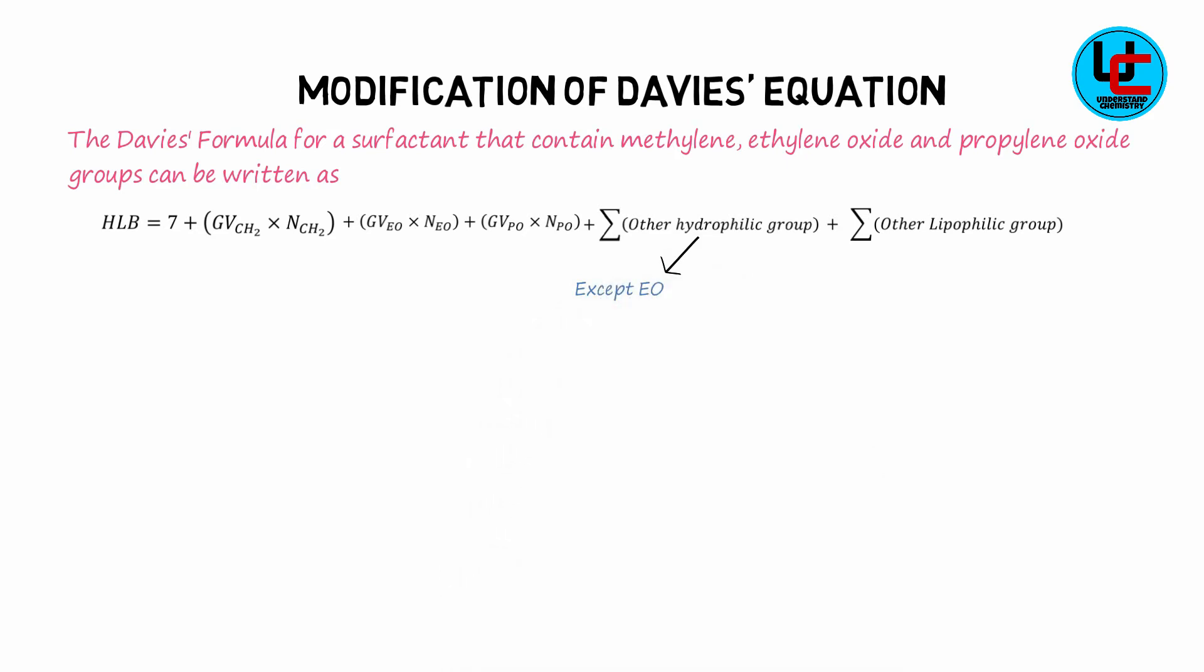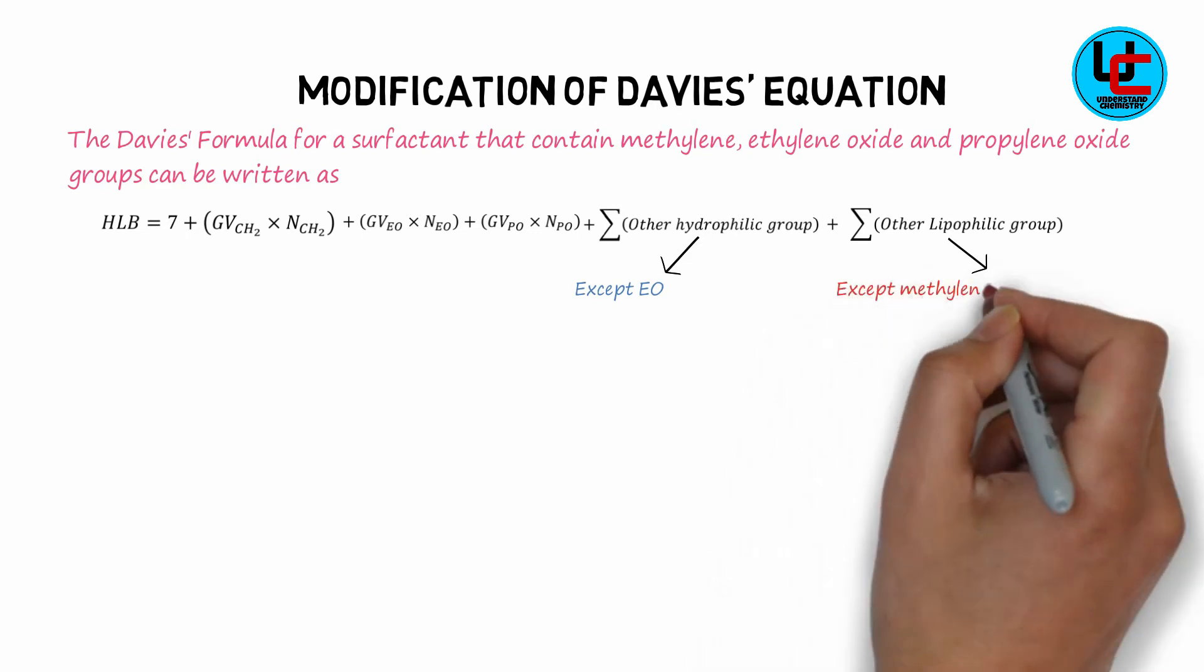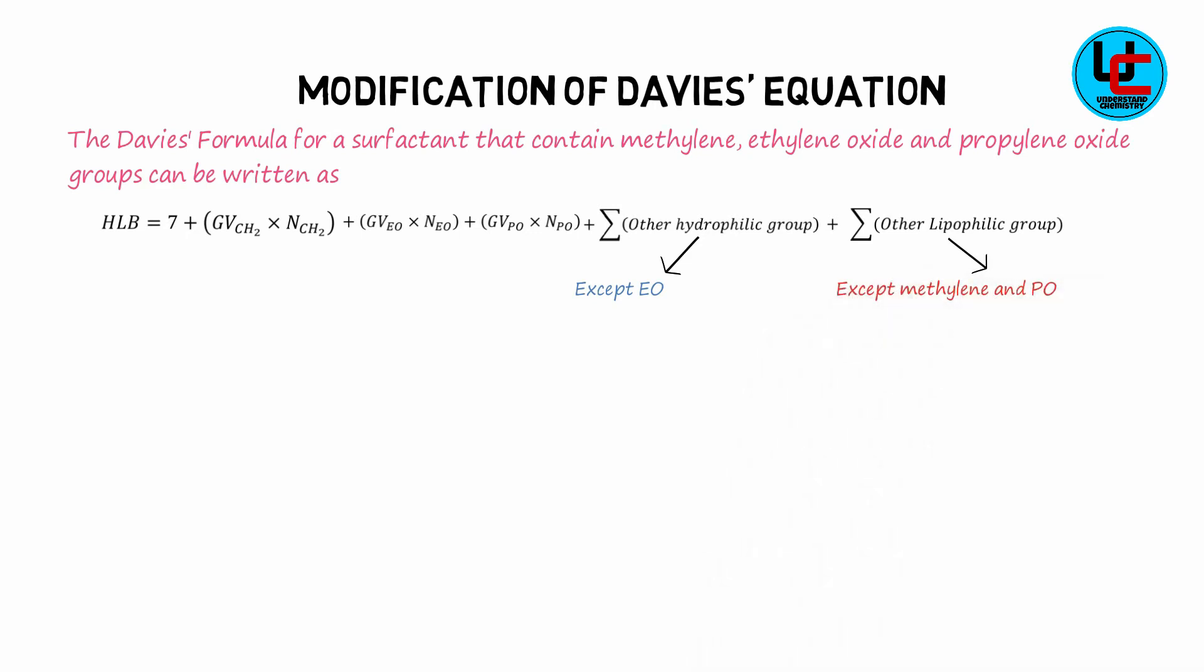In this equation, other hydrophilic groups means hydrophilic groups except ethylene oxide, and other lipophilic groups mean lipophilic groups except methylene and propylene oxide.